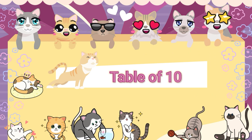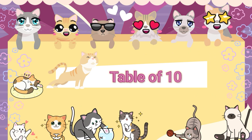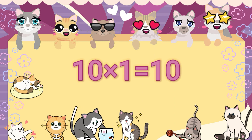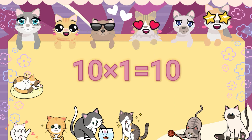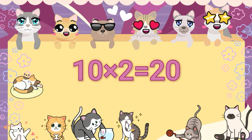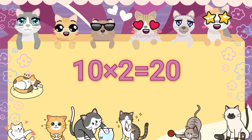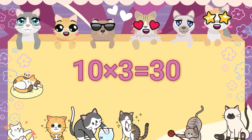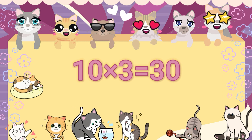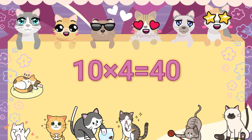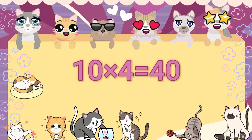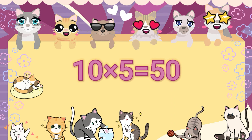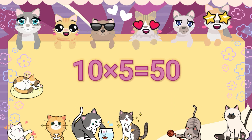Table of ten. Ten ones are ten. Ten twos are twenty. Ten threes are thirty. Ten fours are forty. Ten fives are fifty.